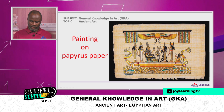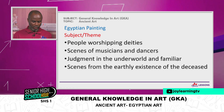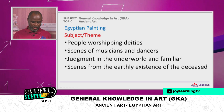There's an image of a painting on papyrus paper so you can take a look. The Egyptians were very good painters — in fact, they are the mothers of modern civilization. Now, what are the subjects and themes of Egyptian painting? Mainly it was people worshipping their deities, paintings of scenes of musicians and dancers, paintings about judgments in the underworld and familiar scenes, as well as scenes from the earthly existence of the deceased. These were the main themes for Egyptian painting.